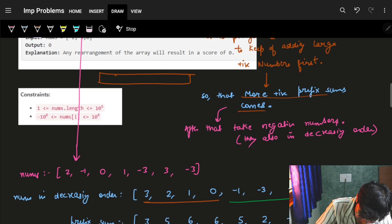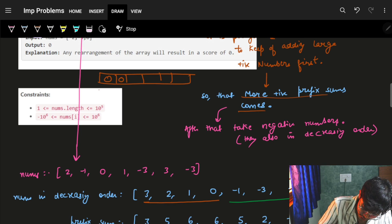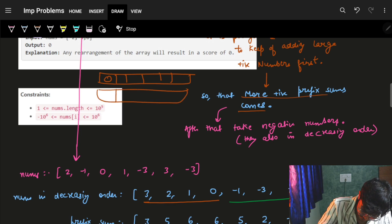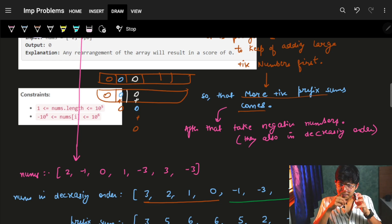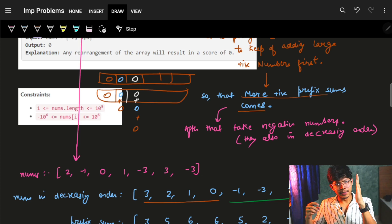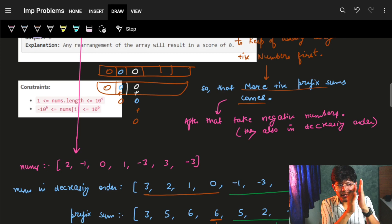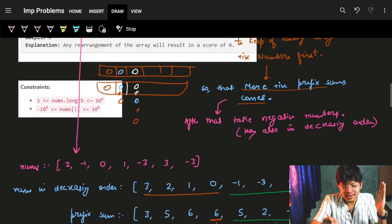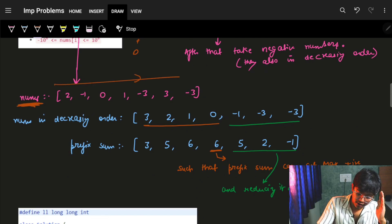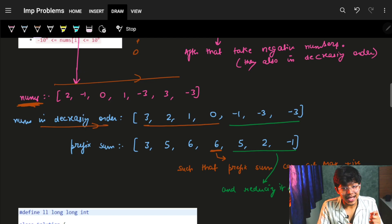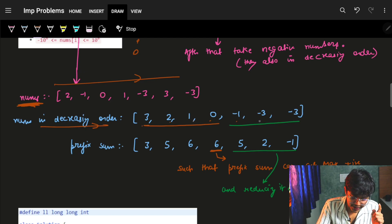Prefix sum indirectly means that if I have these numbers, it will just keep adding them. If I have this orange number here, then blue number came, so blue plus orange will be there. Then let's say a white number came, so white plus blue plus orange will be there, right? So it means that previous numbers are being added up in prefix sums. So why not make those added numbers as large as possible? Which means that I can just sort this array nums in decreasing order, making my nums array decreasing: 3, 2, 1, 0, -1, -3, -3.